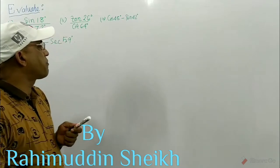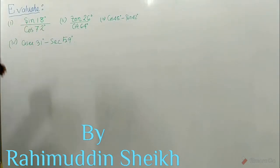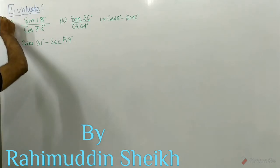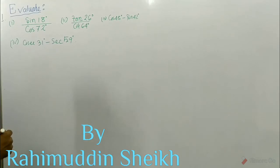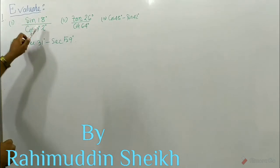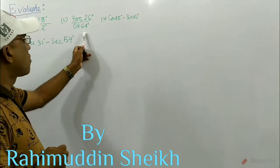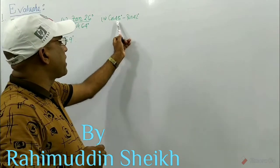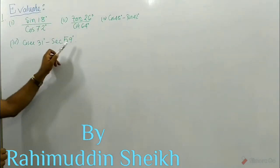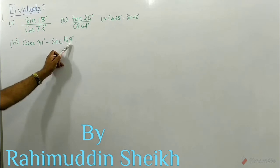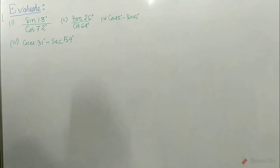This is Exercise 8.3, Question number 1. The problems given are: evaluate sin 18° / cos 72°, tan 26° / cot 64°, cos 48° - sin 42°, and cos 31° - sec 59°. Now we have to find the values of these.